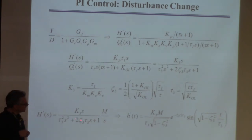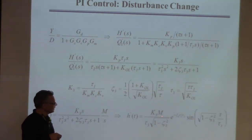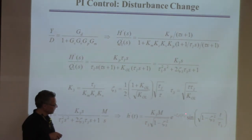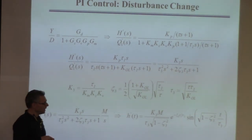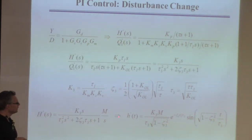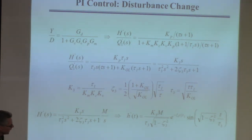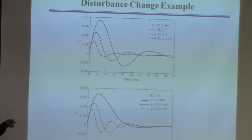We looked at this table entry and found the solution. If we look at this thing, it's going to oscillate — it has a sine term. The exponential term has a negative exponent since zeta and tau_3 are positive, so it goes to zero and the oscillations decay. The asymptotic value is zero, which is good — we're doing a disturbance change, so we want the output to go back to zero. That's why we put integral control in the first place.